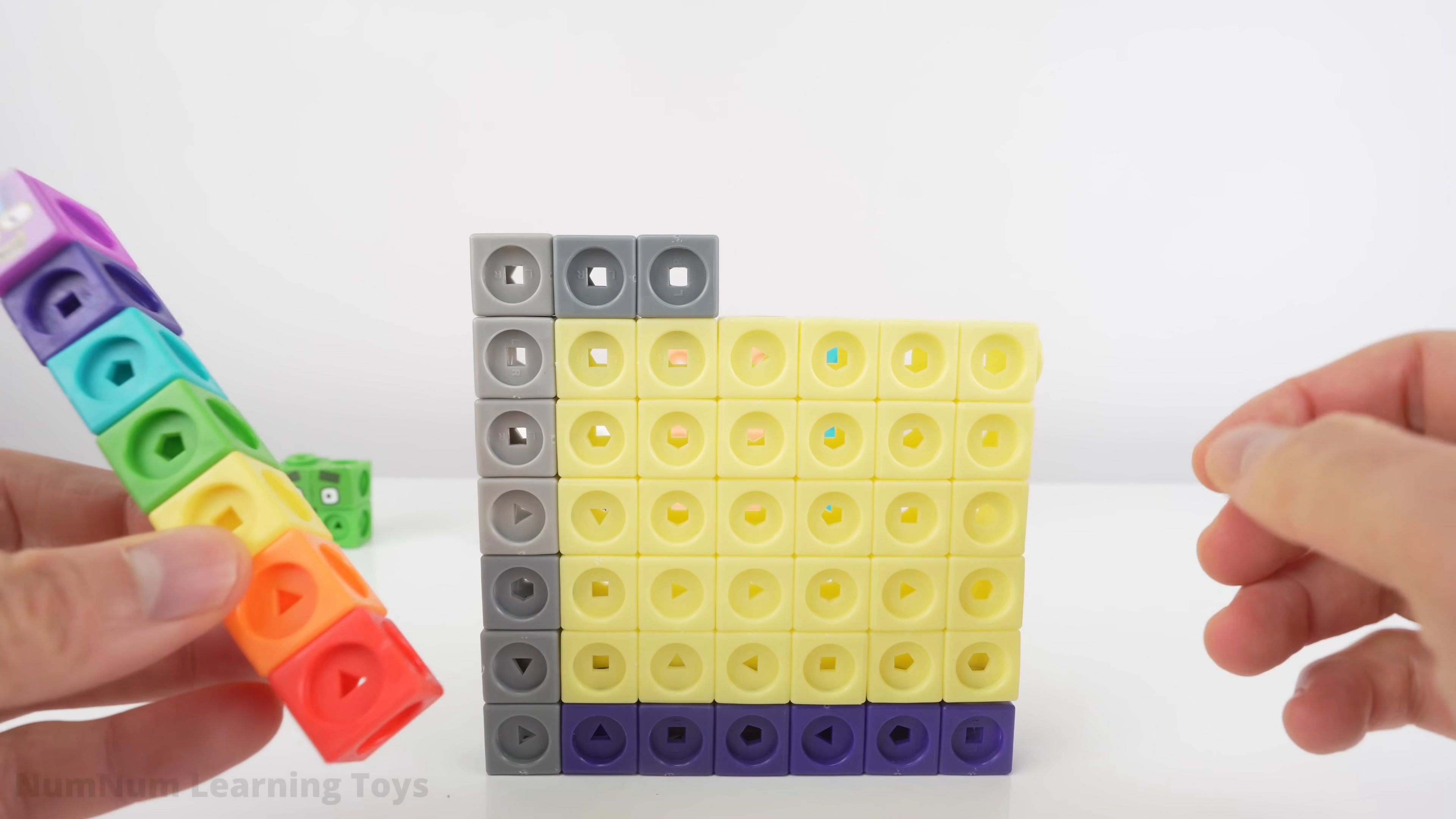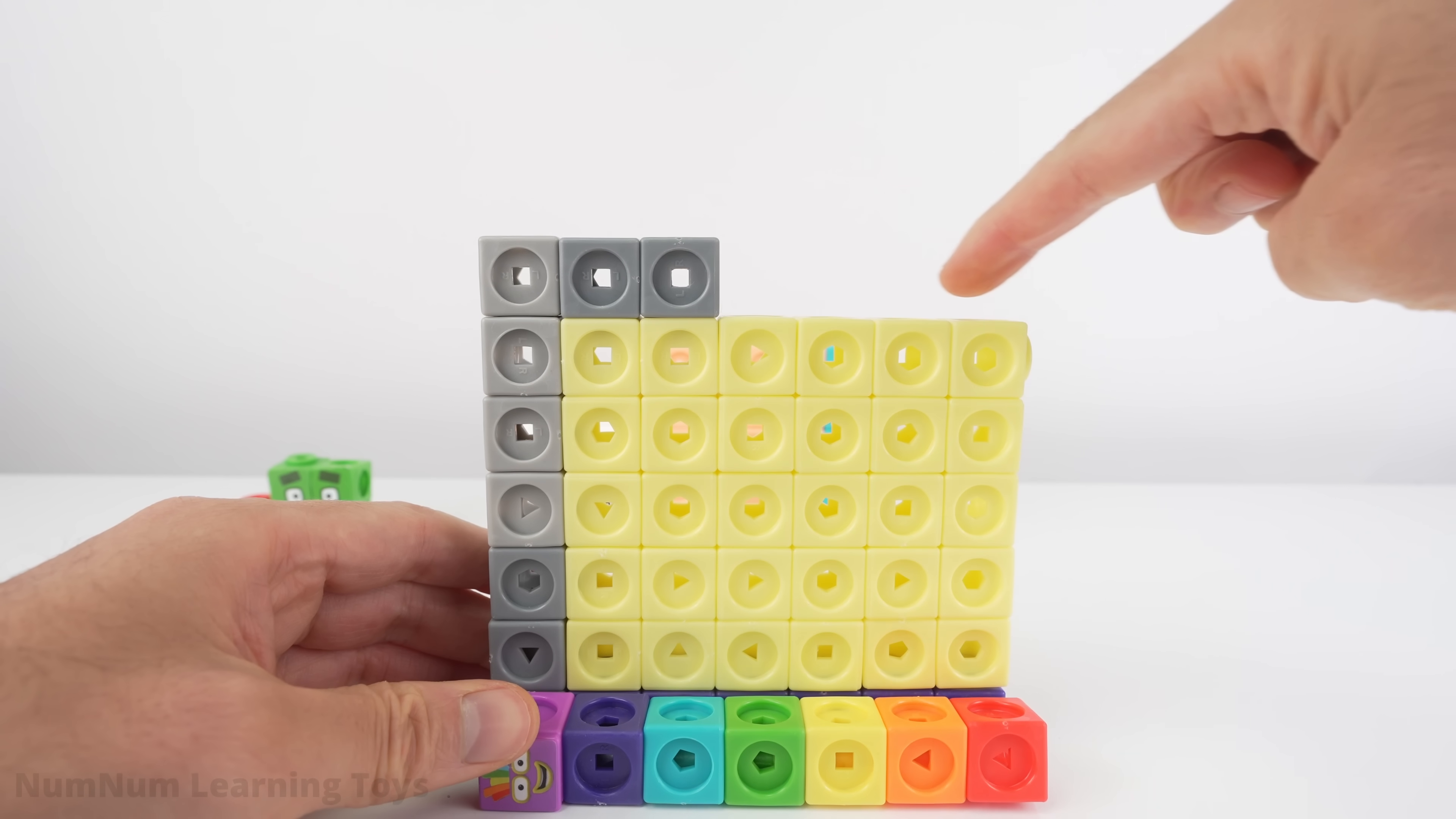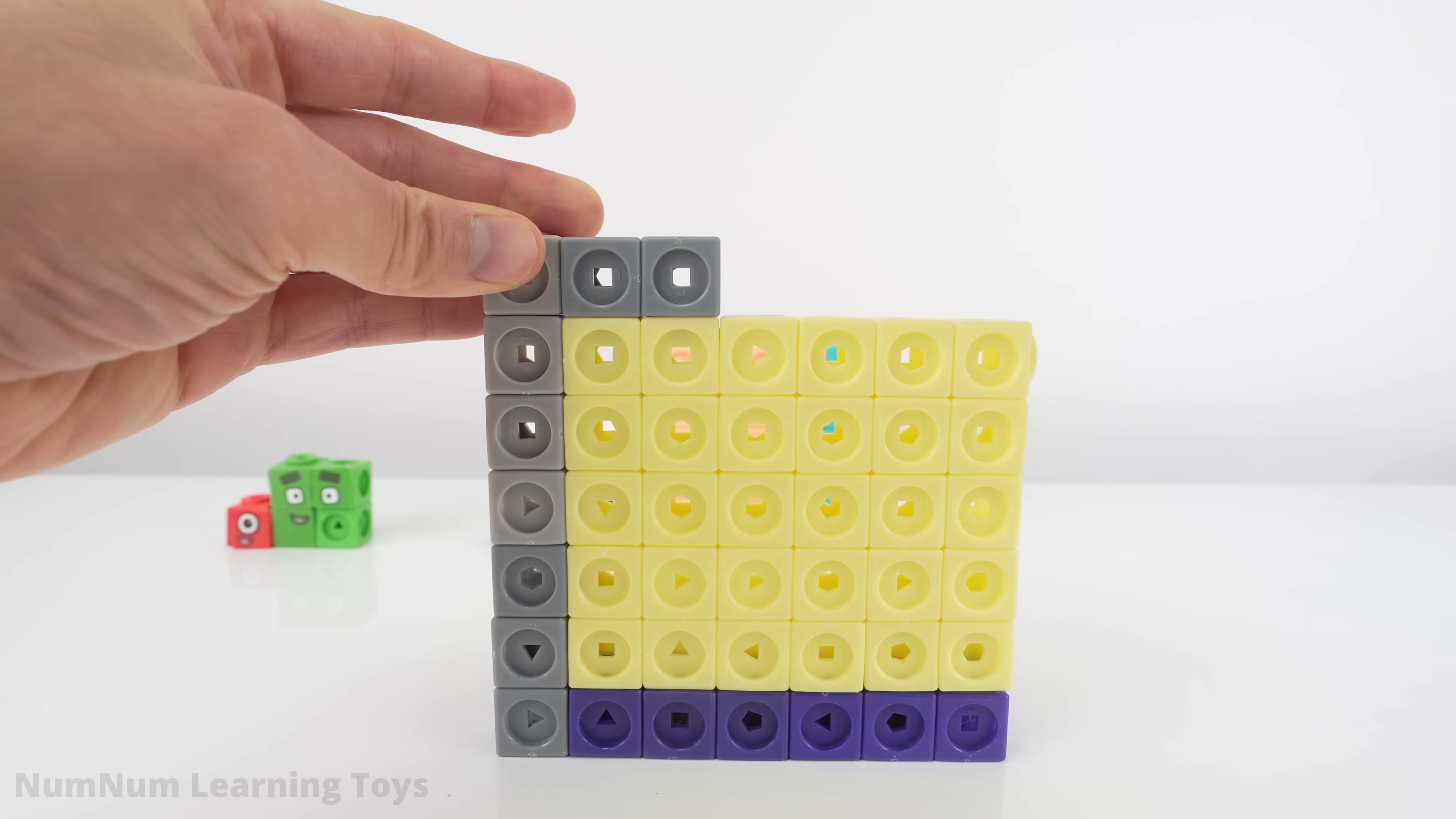This side is seven units tall. The bottom side is seven units wide. The top can be seven units if we add four blocks. Then we can make a square.